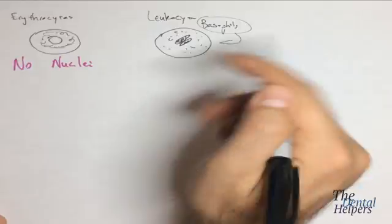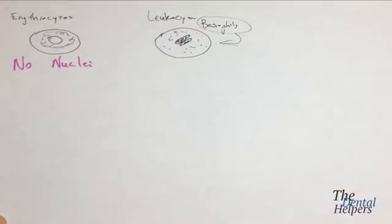Next we have our platelets, which are not really cells, they're non-nucleated disc-like cell fragments. They promote blood clotting. They're formed by megakaryocytes in bone marrow. The megakaryocytes are the site of platelet formation, and the megakaryocyte has an irregular lobulated nucleus.